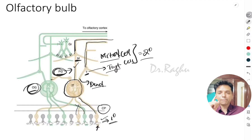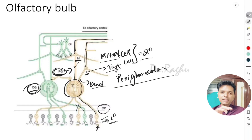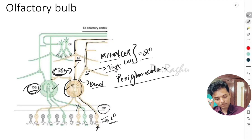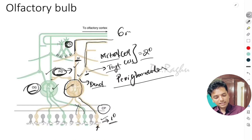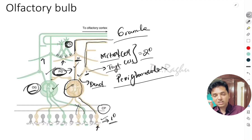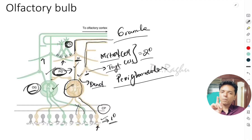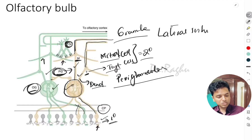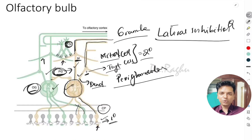Two more cells are present apart from the mitral and tuft cells. The periglomerular cell forms connections between two adjacent glomeruli and has synaptic connections with the dendrites of both the mitral and tuft cells. The granule cell connects with the lateral dendrites of both the mitral and tuft cells. Both the granule cell and the periglomerular cell cause what is called lateral inhibition.